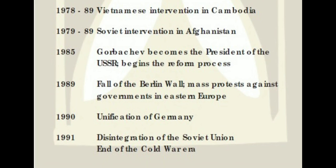In 1985, Gorbachev became president and started the reform process. In 1989, the Berlin Wall fell — a very important year — signifying the beginning of the end of the Cold War. In 1990, Germany's unification took place. Officially, the Cold War ended in 1991, along with the disintegration of the Soviet Union. So, keep 1989 and 1991 in mind. This timeline is very important, students. Thank you.